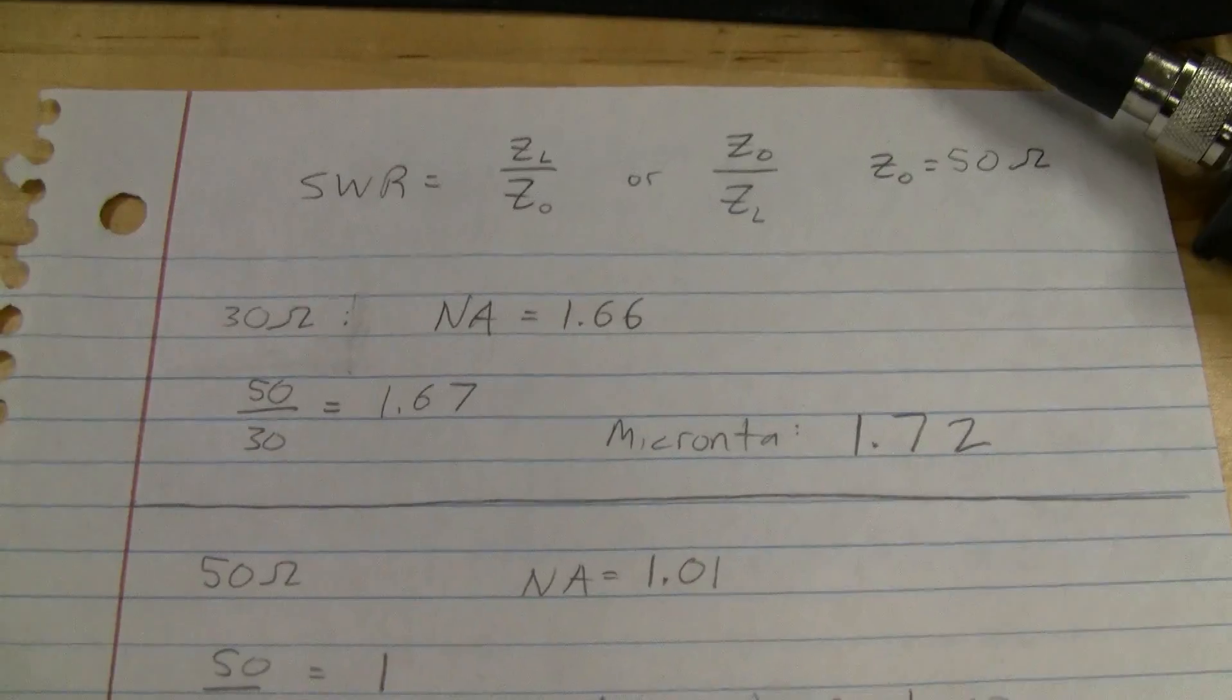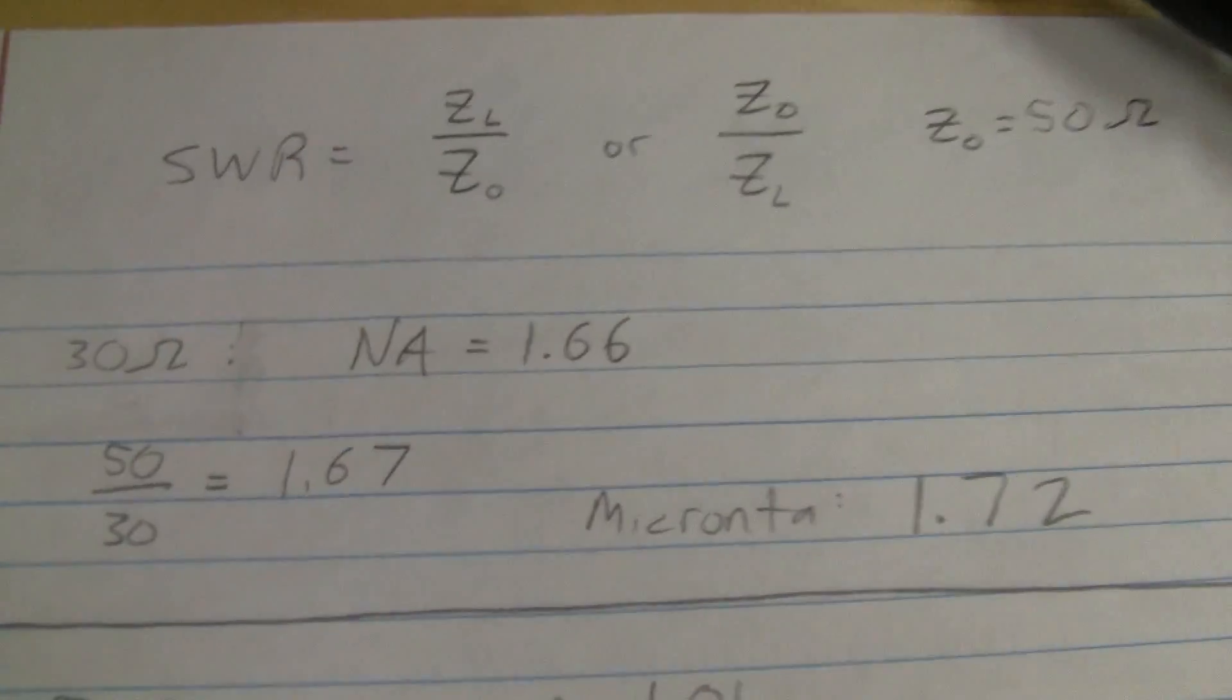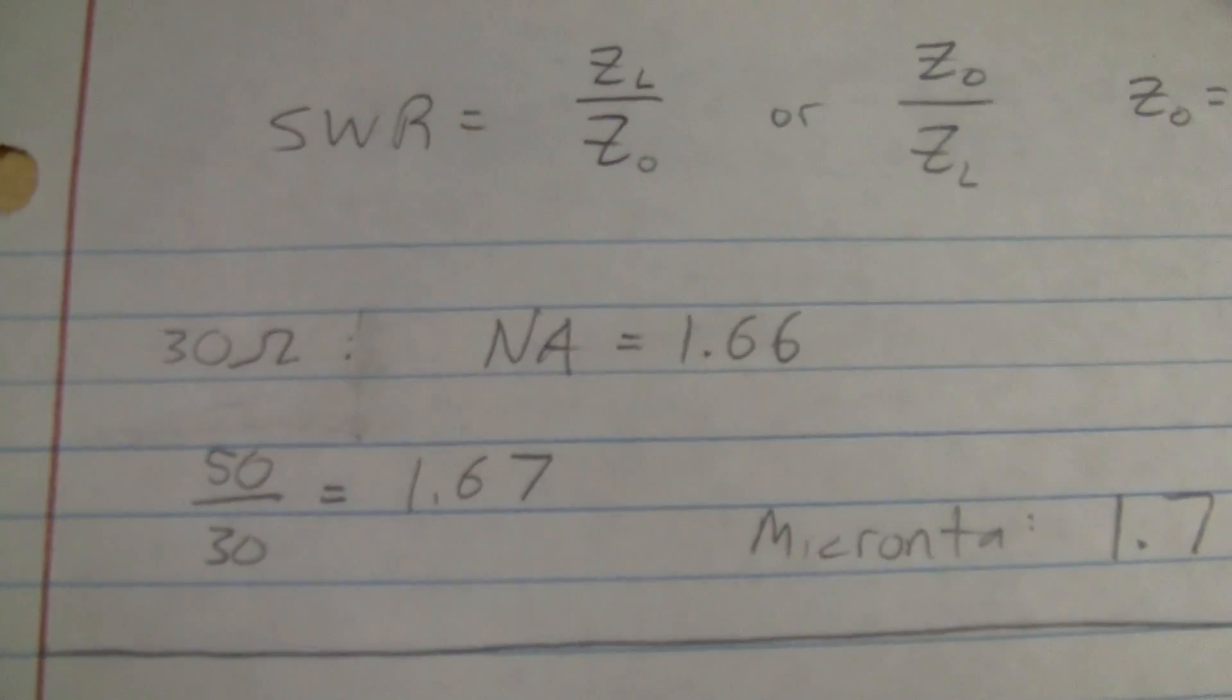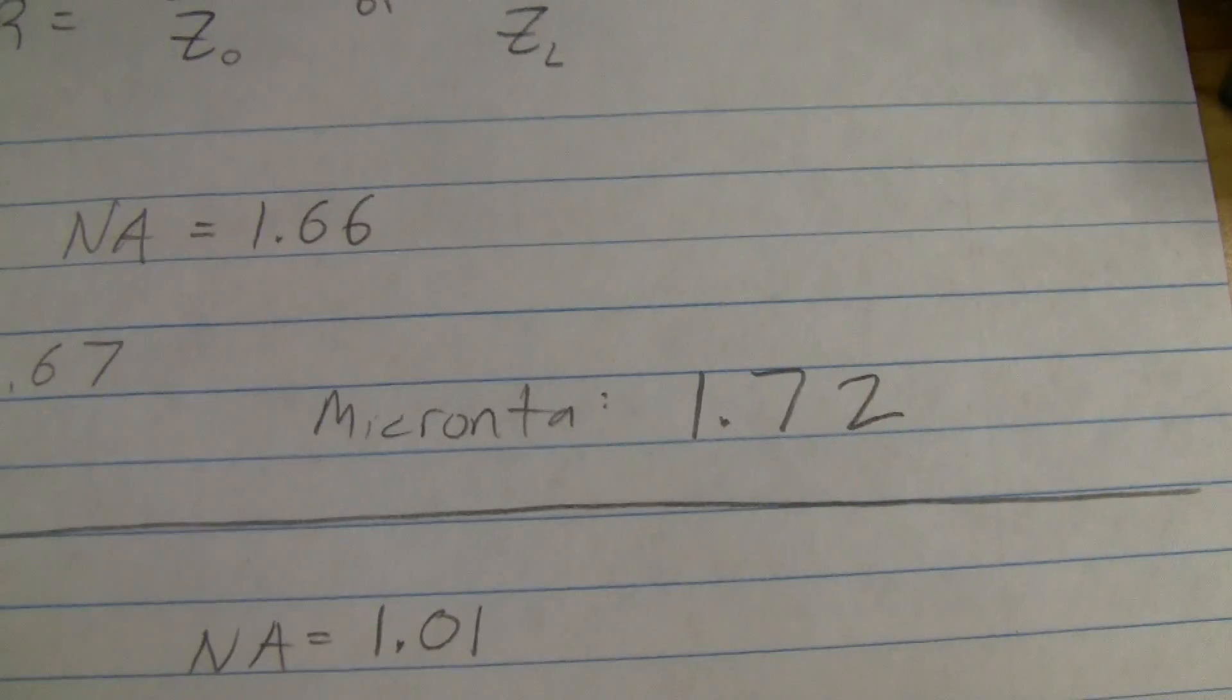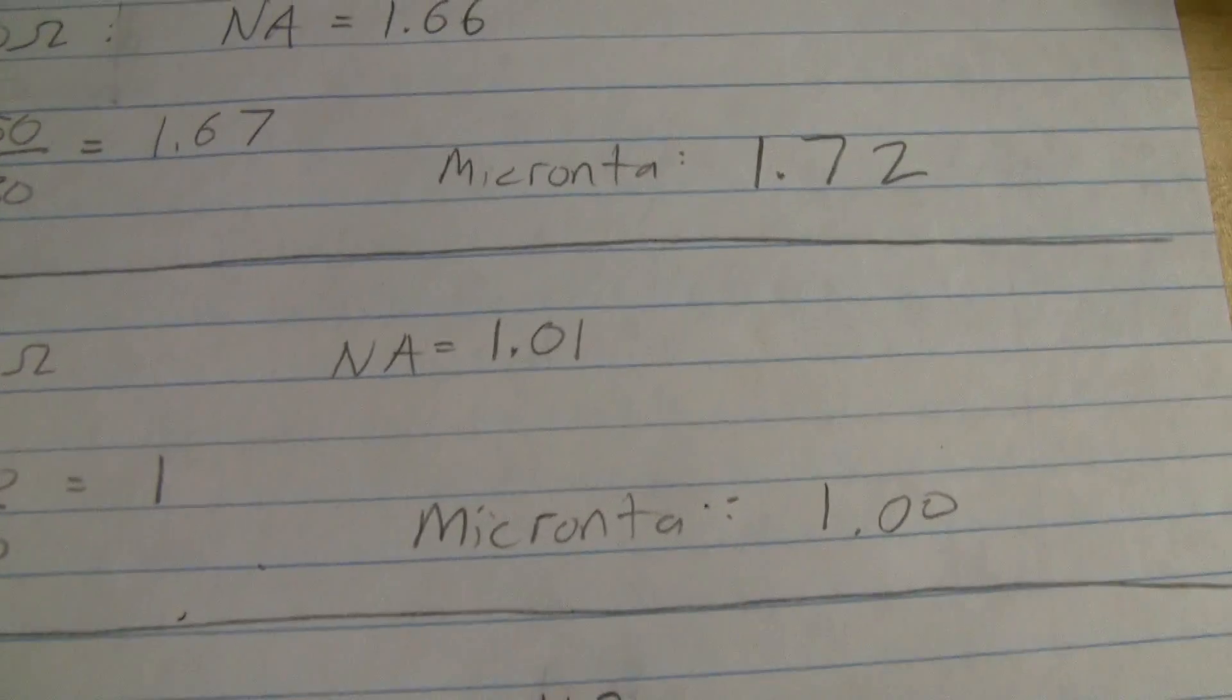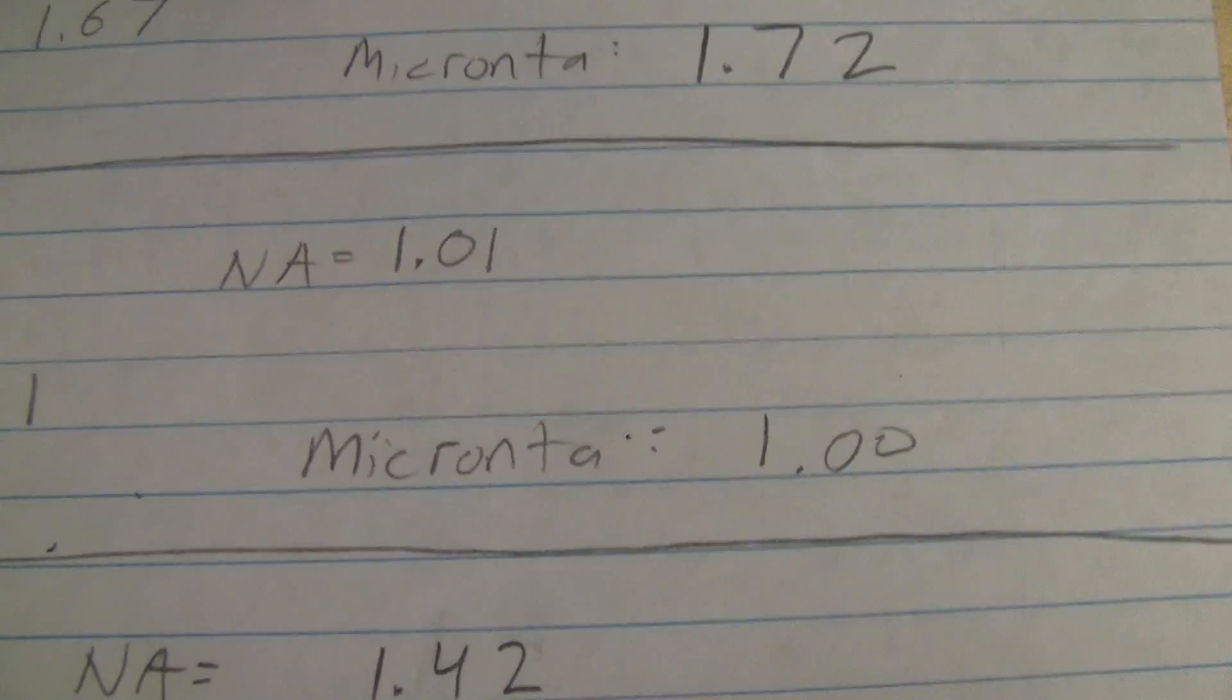Now we can compare the meter measured values with the network analyzer. We'll start off with the 30 ohm. We had a calculated of 1.67, network analyzer measured of 1.66, and the Micronta meter measured 1.72. 50 ohms, of course, we'd expect 1, network analyzer was just about 1, and the Micronta measured 1, and change, the resting position of the needle.